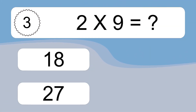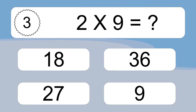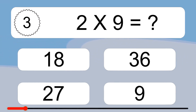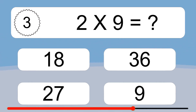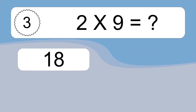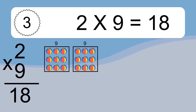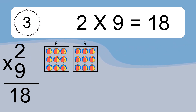2 times 9 equals what? 2 times 9 equals 18. We have 2 boxes, and each box has 9 colorful balls inside. If you count all the balls in all the boxes together, you will have 2 times 9 balls. This equals 18 balls.